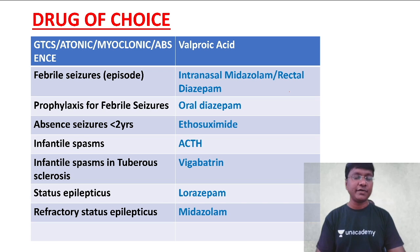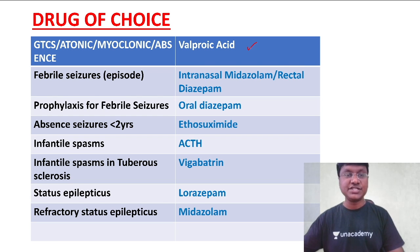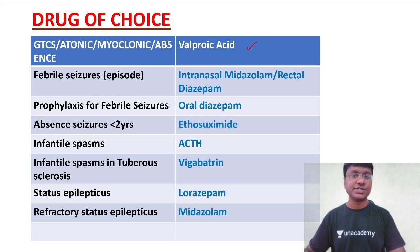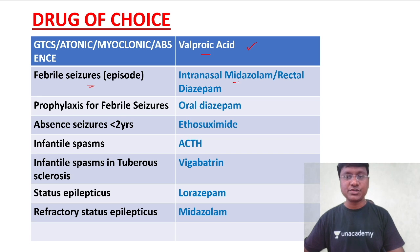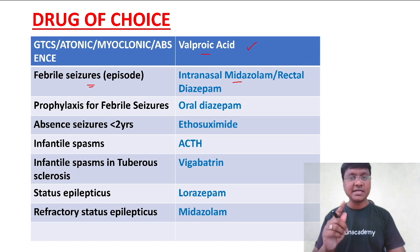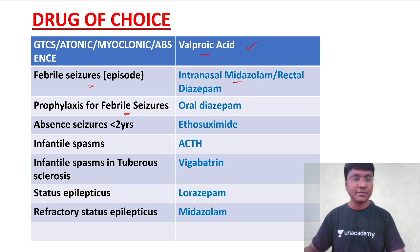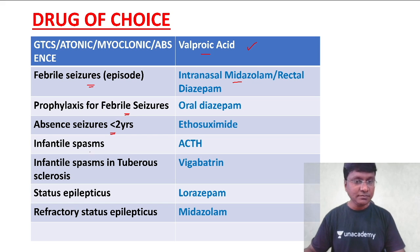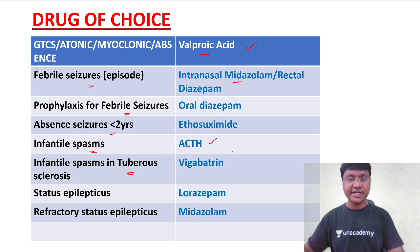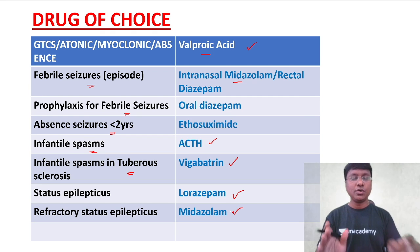For generalized tonic-clonic seizures, atonic seizures, myoclonic, and absence seizures, drug of choice is valproic acid. For febrile seizures during the episode, drug of choice is intranasal or rectal diazepam, or intranasal midazolam. For prophylaxis of febrile seizures, it is oral diazepam. For absence seizures under two years, ethosuximide; over three to four years, valproic acid. For infantile spasms, ACTH; in tuberous sclerosis, vigabatrin. For status epilepticus, lorazepam; for refractory status epilepticus, midazolam.